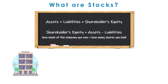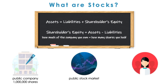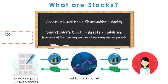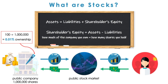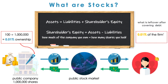For example, if a company has 1 million shares outstanding and you purchased 100 of these shares on the stock market, then you now own 0.01 percent of this company's assets and earnings after the company pays back its liabilities. This is because firms owe a legal obligation to pay back debt investors such as bondholders, which is why liabilities are paid out before equity.